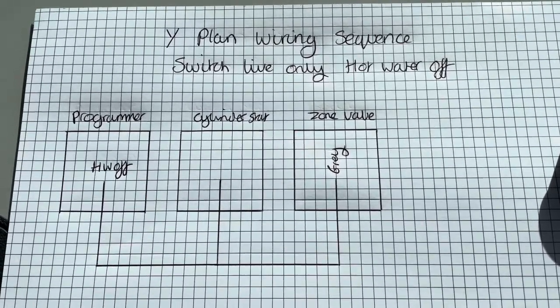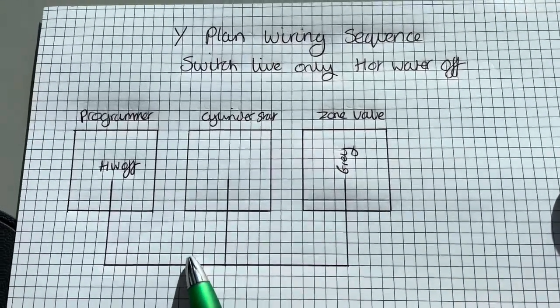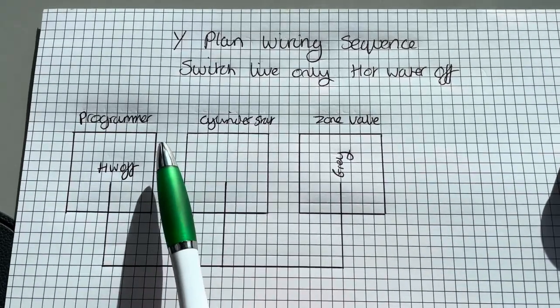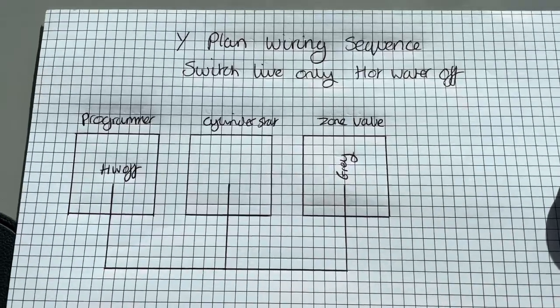So hopefully I've explained that, how I think of it. But that's why it used to confuse me. Because in testing, even when hot water was on, sometimes I was getting 240 on this grey and going back. And I was thinking why.